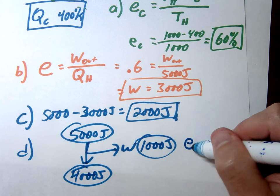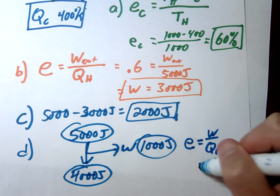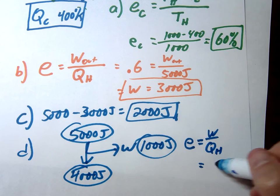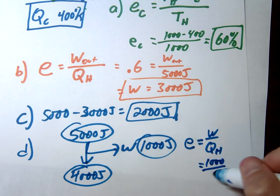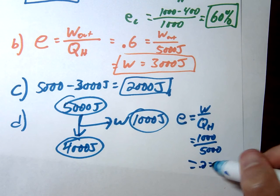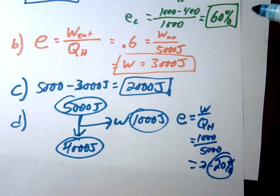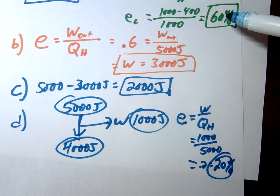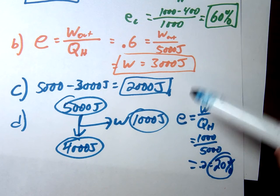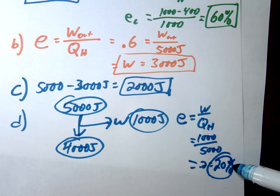So if you're now looking at your efficiency in this case, work over heat input, you would get 20%. 1,000 over 5,000 is going to give us 0.2 or 20%. So even though ideal under perfect conditions, we could run this engine at 60% efficiency, in a real-life scenario, it's always going to be less than that maximum possible efficiency. In this case we get 20%.